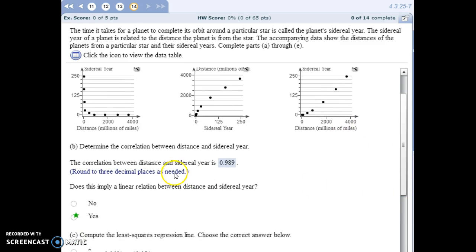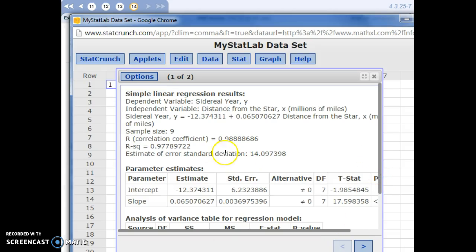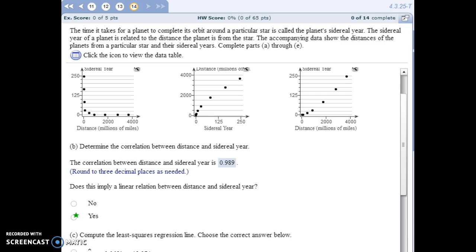For part B, determine the correlation between distance and sidereal year. So, jumping back into StatCrunch, it told us what the correlation coefficient was. It looks pretty close to 1. We got 0.98888. So, round that up, 0.989. That does imply a linear relationship. Something that close to 1 for our correlation coefficient implies a linear relationship.